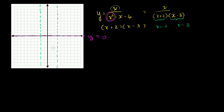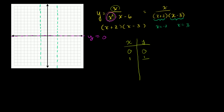Now, with all our asymptotes drawn, let's try out some points — a little table. When x is equal to 0, we have 0 over 0 minus 6, which is 0 over negative 6, just 0. When x is equal to 1, we have 1 over 1 squared minus 1 minus 6 — that's 1 over negative 6.